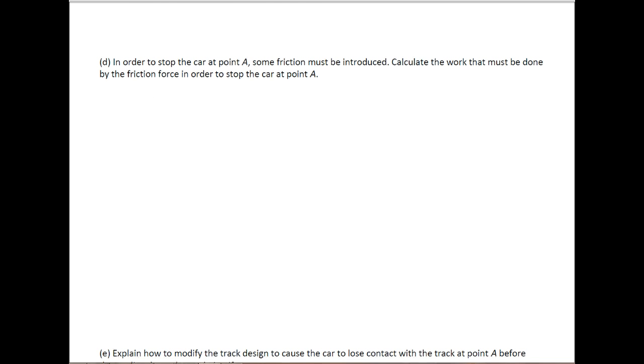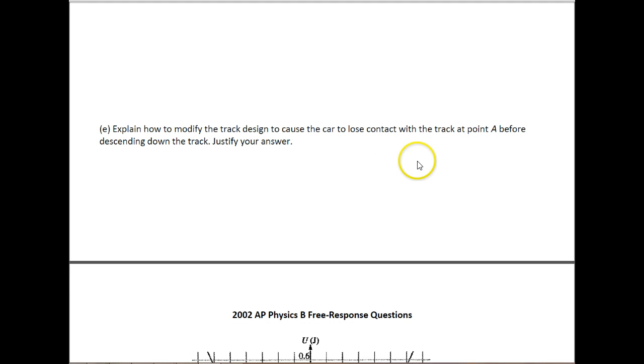Finally, the very last part says, explain how to modify the track to cause the car to lose contact with the track at point A before descending down the track, and then they want you to justify your answer. So here we need to, basically, if we just decrease, so we're going to say decrease the radius of the second hill, it'll have too much speed, and it'll go over that. The car will lose contact whenever you have mg minus mva squared over r, if it's less than or equal to 0. And remember, this was essentially our notation for, if you think about the normal force.